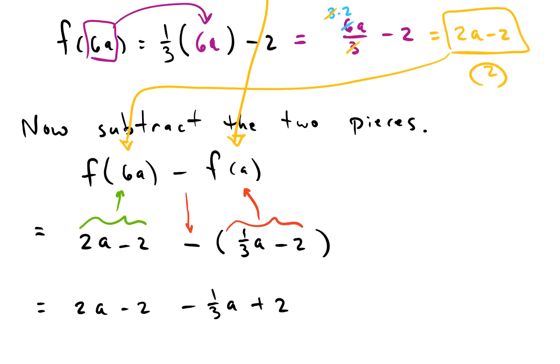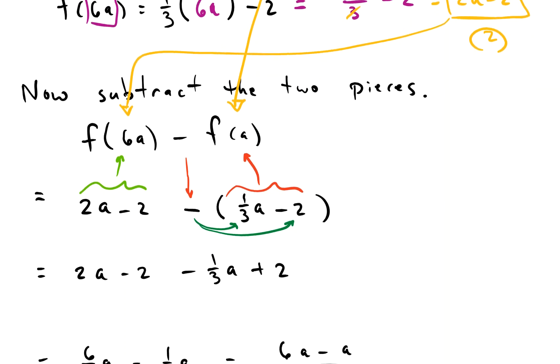So one point that could trip you up is this: this negative here needs to be distributed through each piece of this second term. So we get a negative 1/3 a there, and a negative times negative 2 gives us a positive right there.